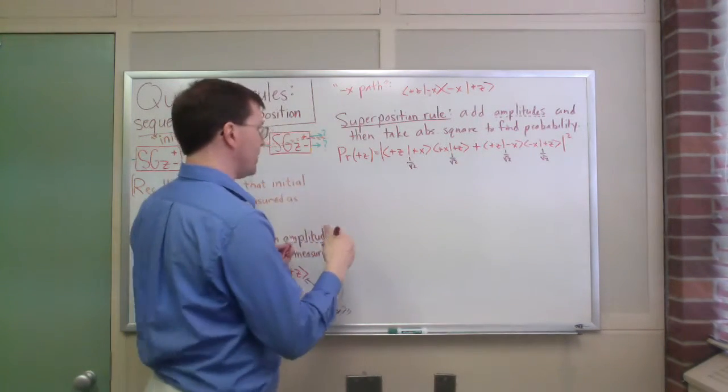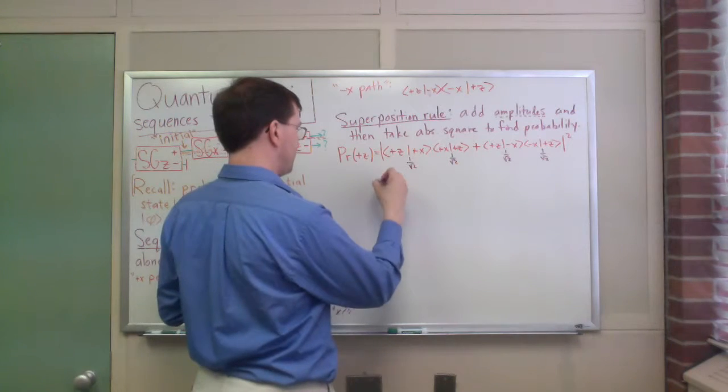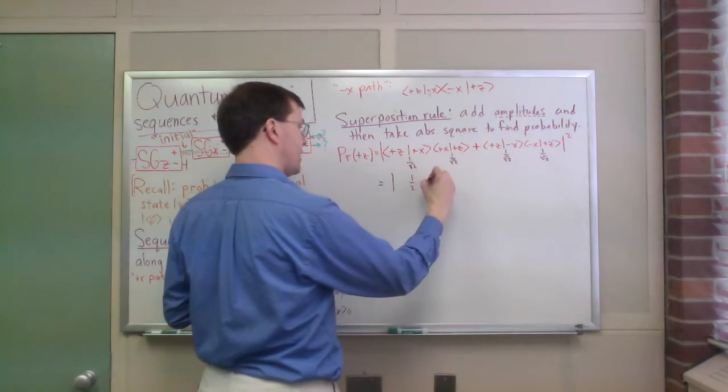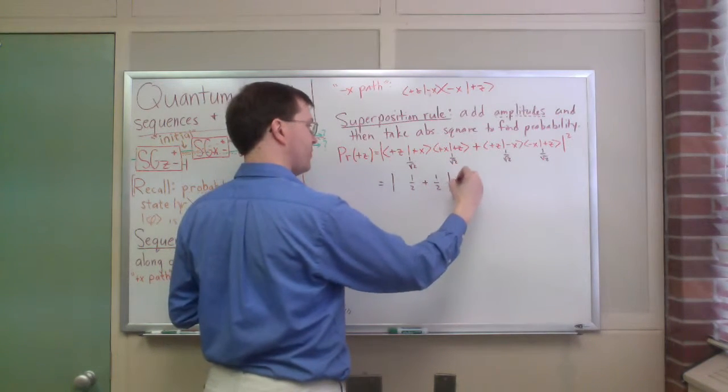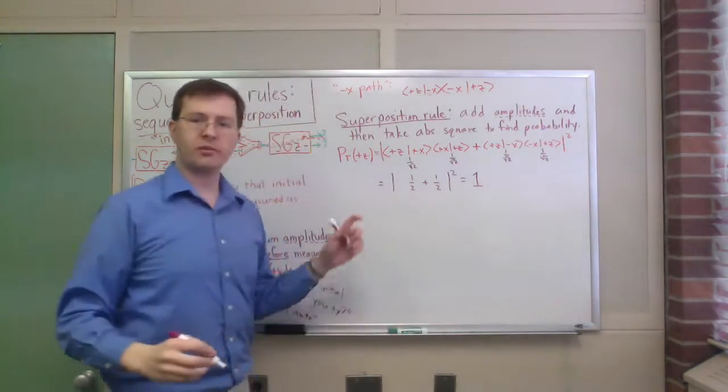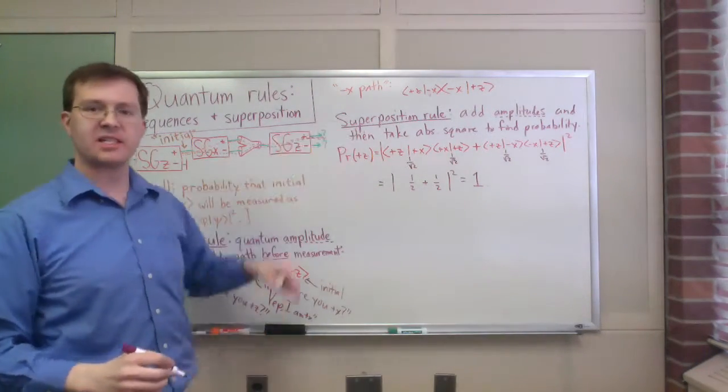And so the whole thing then adds up to be the absolute square of one half plus one half which is just 1. There's absolutely, every one of these will come out the plus z state.